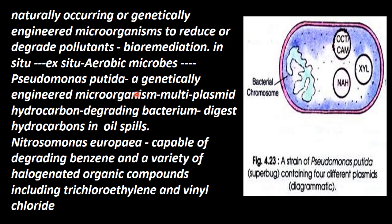What happens in genetic engineering? Whether plasmid is working or genetic, all those genes are mixed. So it is a multi-plasmid — one, two, three, four types of plasmids in the bacteria.